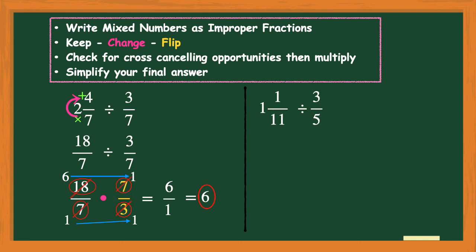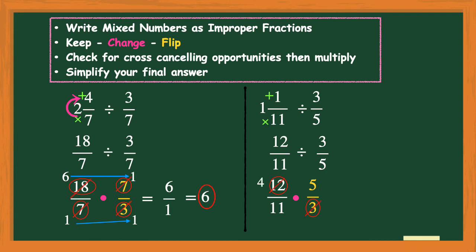One more practice problem: 1 and 1/11 divided by 3/5. Convert the mixed number to an improper fraction: 11 × 1 = 11, plus 1 = 12, so the improper fraction is 12/11. Bring down the division and bring down 3/5. Apply keep-change-flip: keep 12/11, change division to multiplication, flip 3/5 to its reciprocal 5/3. Looking for cross-canceling — 12 and 3 share a common factor of 3: 12 ÷ 3 = 4 and 3 ÷ 3 = 1. 5 and 11 share no common factors, so leave those alone.